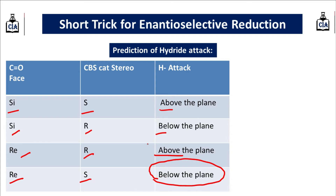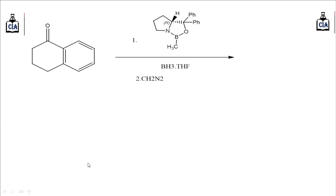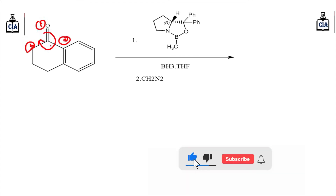You just have to remember this table. First is S-S → above; keep one term constant and change the other — if the face is si and the catalyst is R, it is below the plane. Now let us solve an example. For this ketone, to determine the face, we number 1, 2, 3 — and the arrow direction is clockwise.